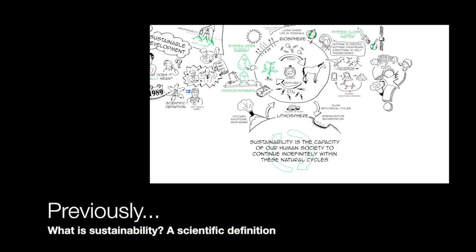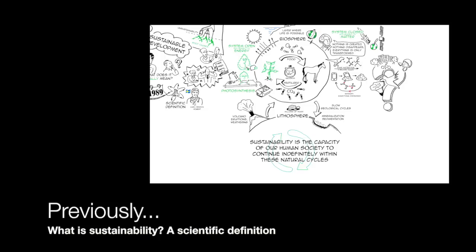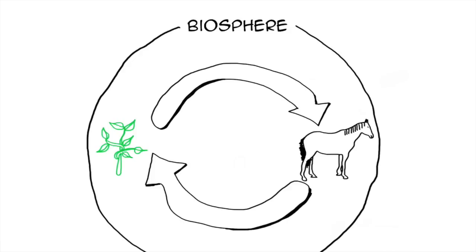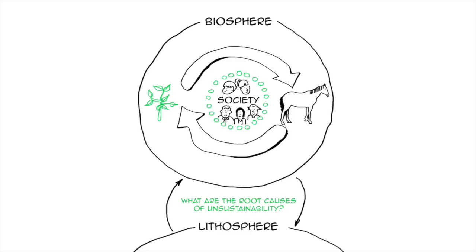So if you haven't watched the first video, make sure that you do that before watching this one. From there the group of scientists looked at the things that we do in our human society that interfere with natural cycles in order to identify the root causes of unsustainability.